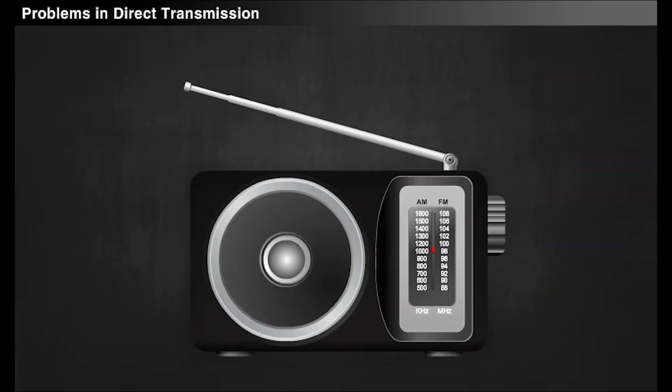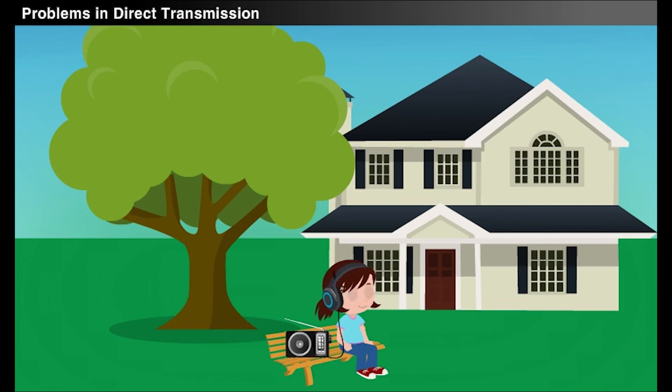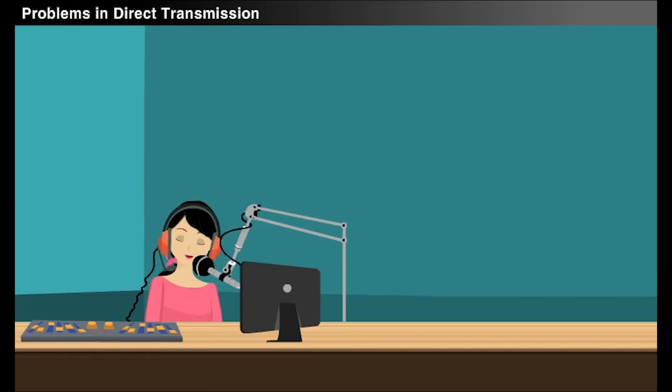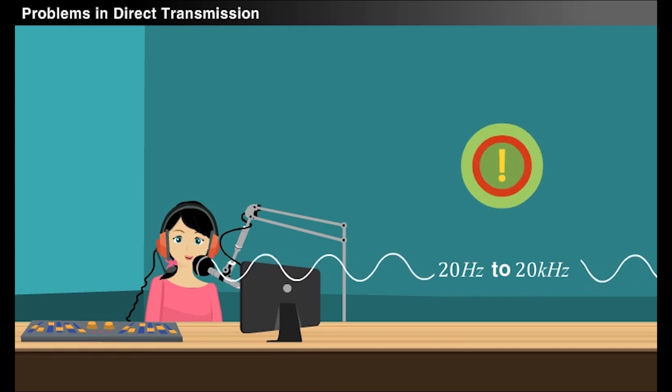One of the popular communication systems where the process of modulation is applied is in radio communication. Most of us have radios in our house. Radio gets the signals from the base station. The frequency of human voice signal ranges from 20 hertz to 20 kilohertz. These are low frequency signals. It is impossible to transmit these low frequency signals directly due to certain drawbacks. Let us see what are the problems involved in transmitting the low frequency signals directly.